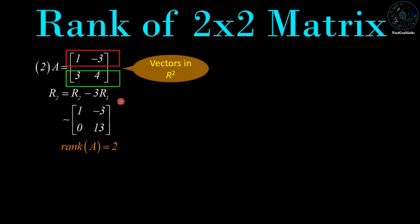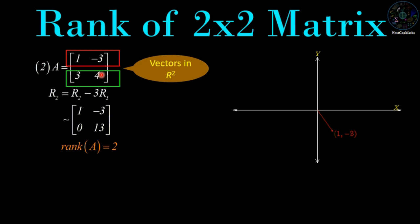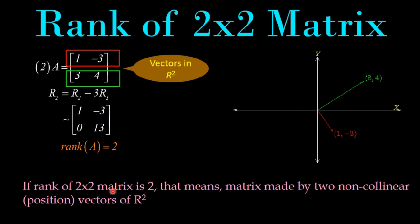Similarly, we consider the first and second rows as vectors of R2. So [1, -3] is a vector of R2 and [3, 4] is also a vector of R2. Plotting these points on R2, both vectors lie in different directions. Therefore we cannot find any single line passing through both position vectors. We conclude that if the rank of a 2×2 matrix is 2, then the matrix is made by two non-collinear position vectors of R2.